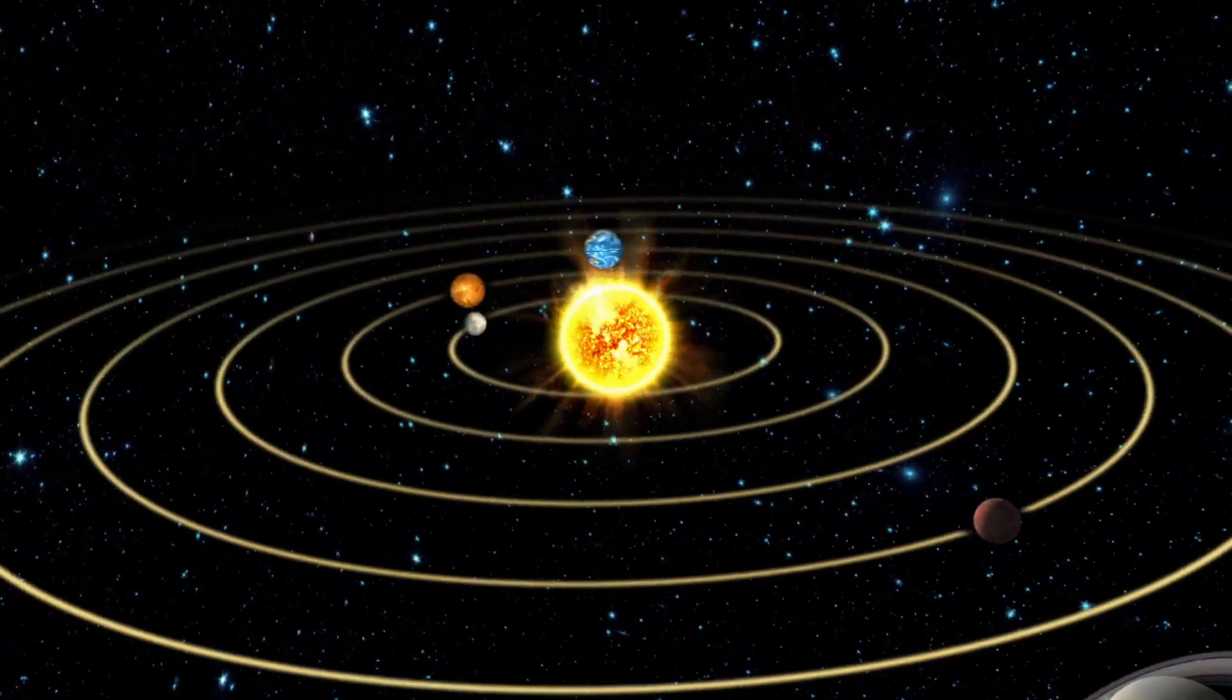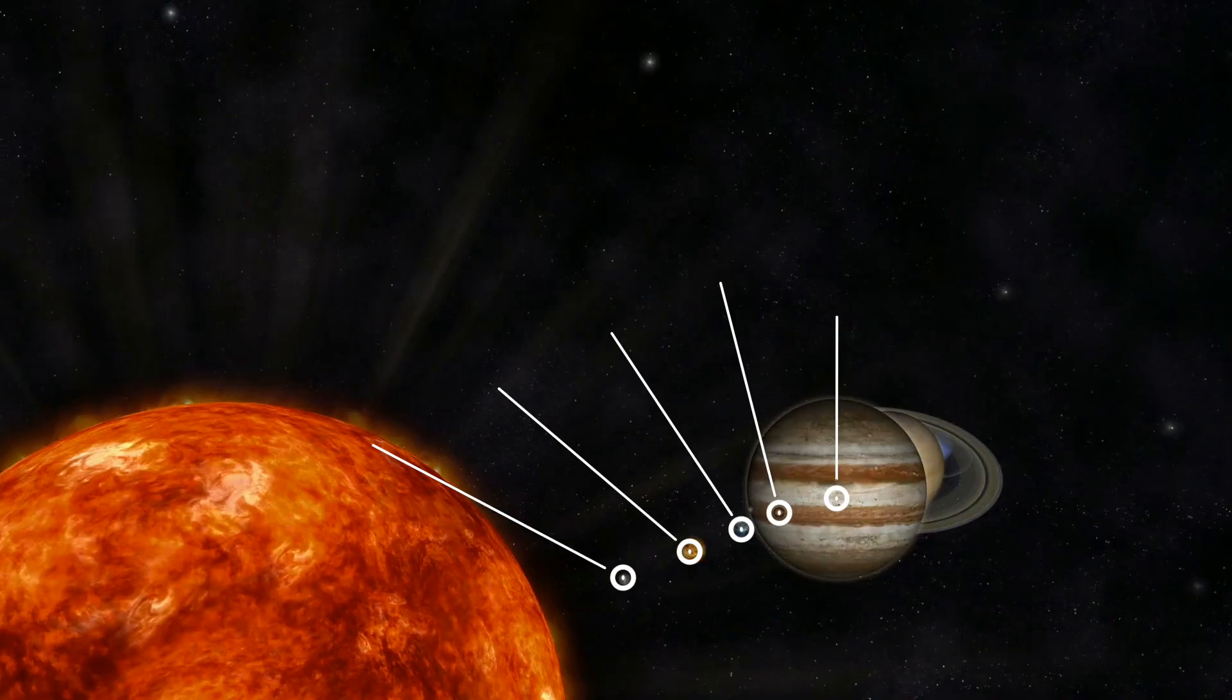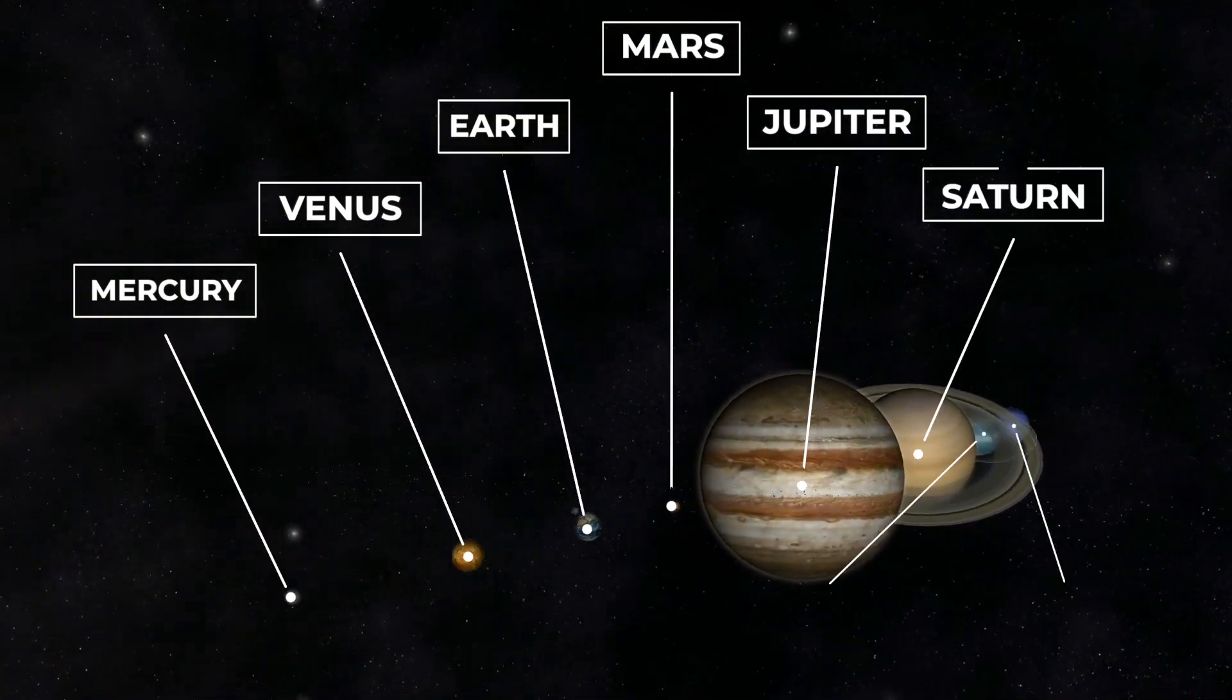How much do you actually know about our solar system? Would you be able to list all eight planets orbiting our sun off the top of your head?